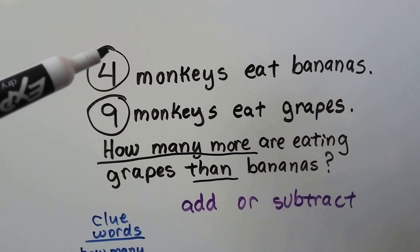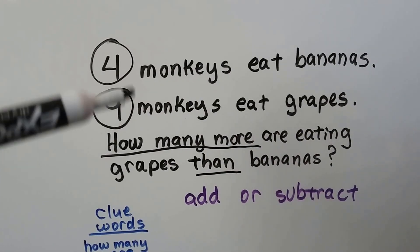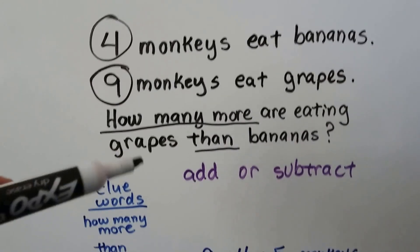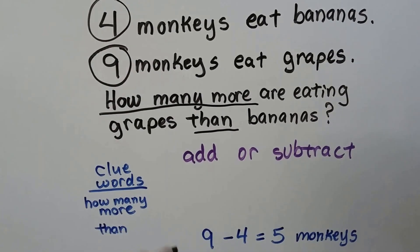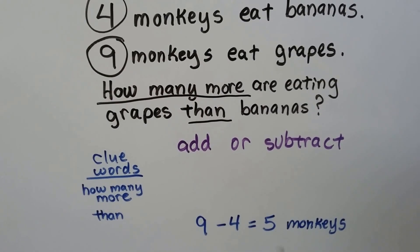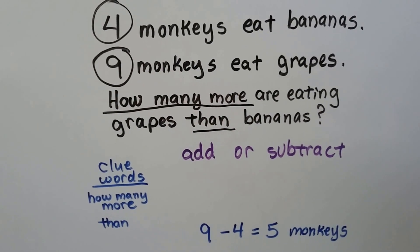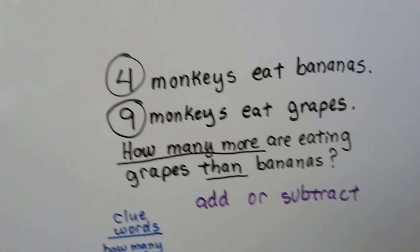Well, four were bananas and nine were grapes. We need to find the difference between these two numbers. And the bigger number is the minuend. That's going to go first. Nine minus four equals five. Five more monkeys are eating grapes than bananas.